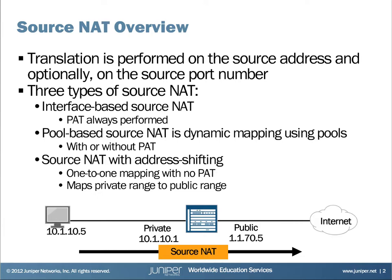The last type of source NAT is address shifting. This is similar to pool-based source NAT — we create a pool of public addresses, and within this pool we define the first private address, called a host address, that lines up with the very first public address in the pool. From there, we have a direct relationship between the private and public addresses in the pool. PAT is always disabled with address shifting.